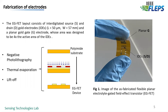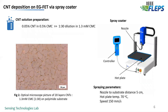The advantage of our structure is that we have a planar gold-gate electrode, and there is no need to use an external reference electrode, which makes the measurements much easier. In order to finish the fabrication of the device, a semiconducting channel is required. For this work, we decided to work with semiconducting carbon nanotubes due to their outstanding electrical and mechanical properties. We prepared a carbon nanotube solution using carboxymethylcellulose as a surfactant, and the solution was diluted 1 to 30 in 1.3 millimolar carboxymethylcellulose. To deposit the nanotubes onto our structures, we used a spray coater.